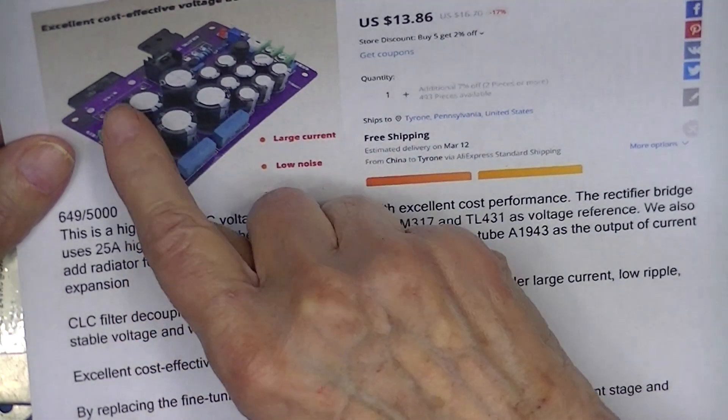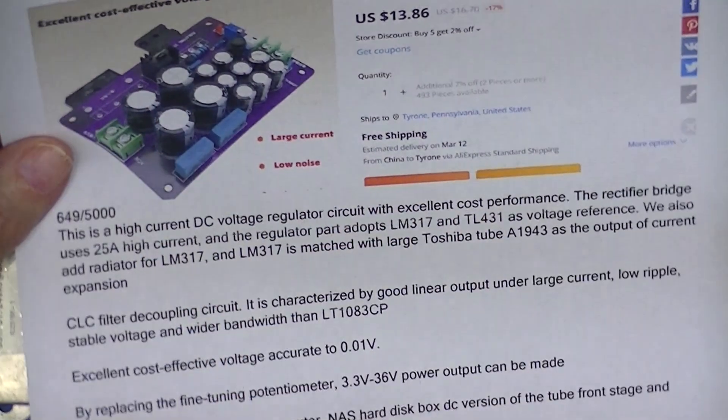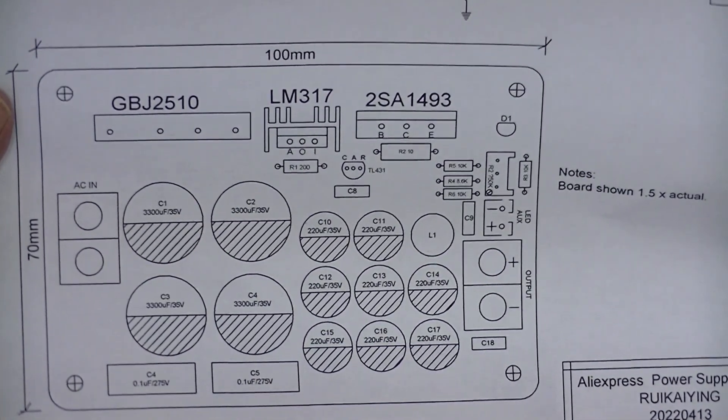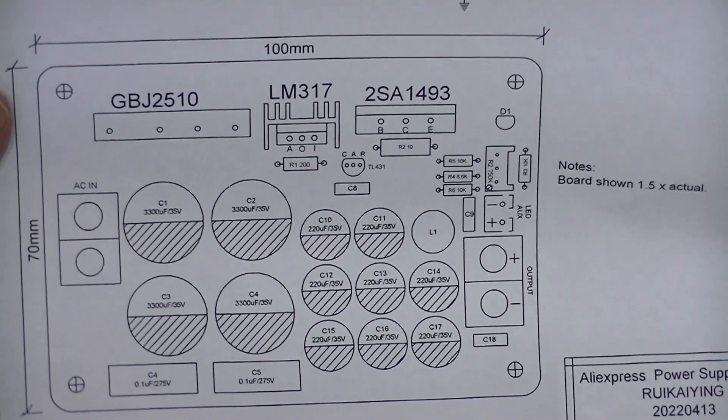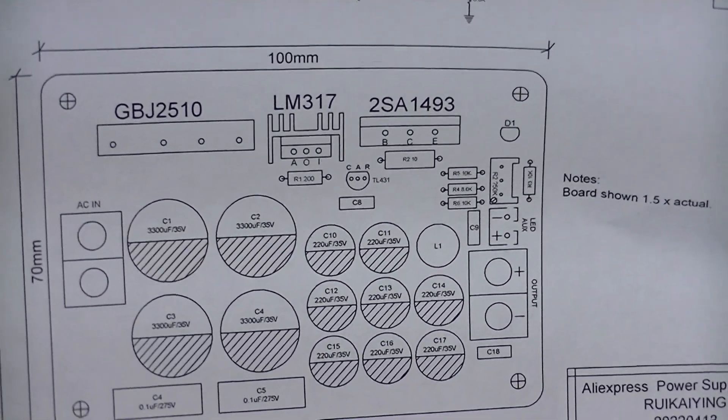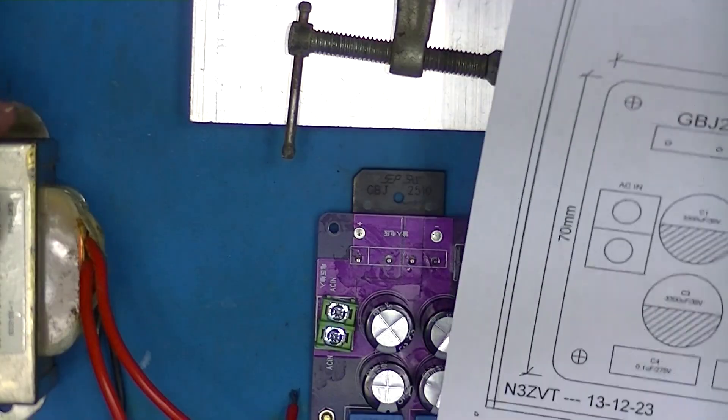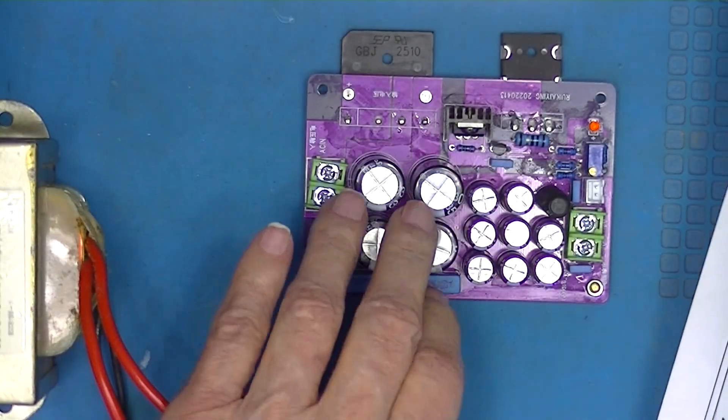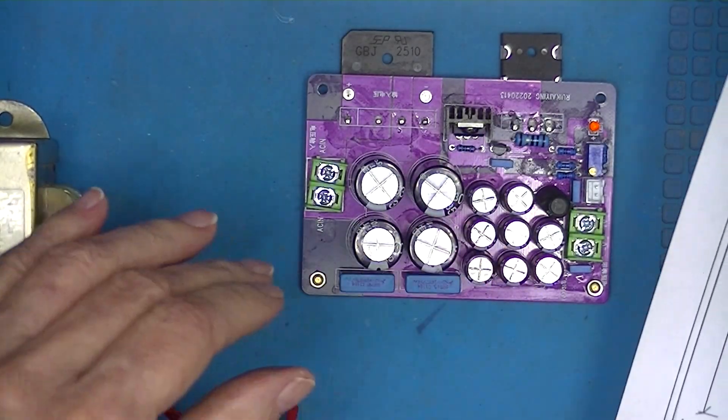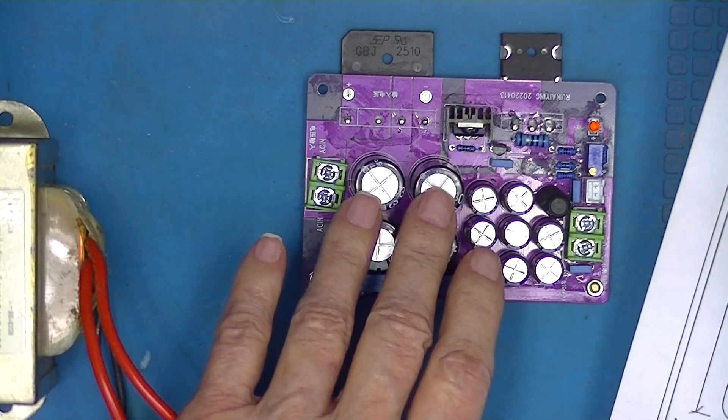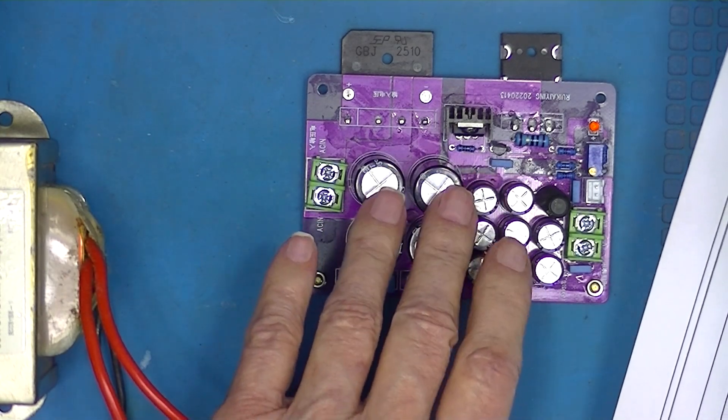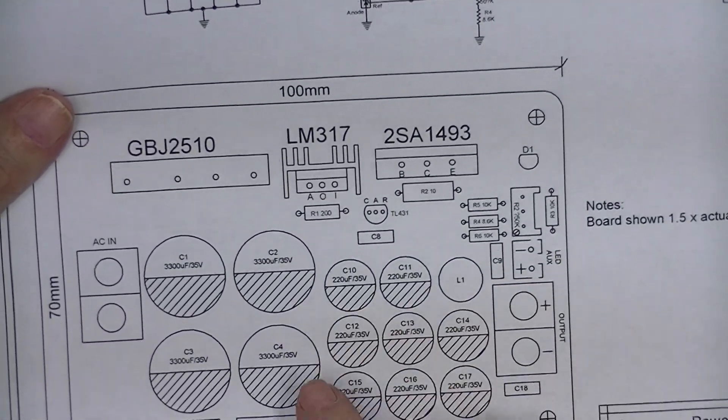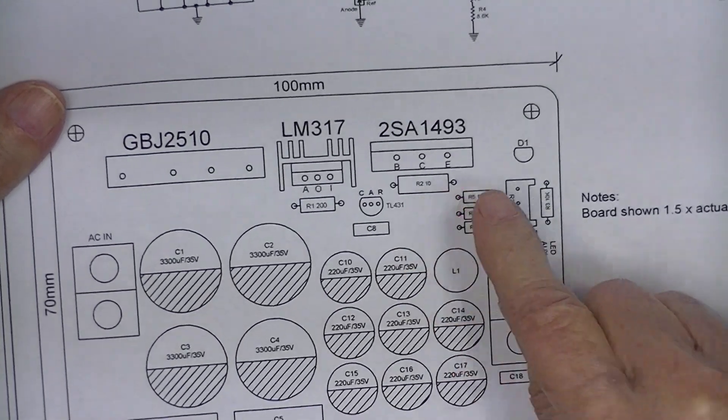They do mention 25 amps but that refers to the current rating of the bridge rectifier. As I often do with AliExpress and eBay Chinese pieces, I try to make a board layout and a schematic. The board layout is just the location of these components.